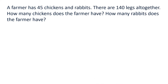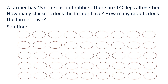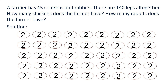Let us start solving the problem. A farmer has 45 chickens and rabbits. There are 140 legs altogether. How many chickens does the farmer have? How many rabbits does the farmer have? In the problem, we are given 140 legs and a total of 45 heads, meaning there are 45 chickens and rabbits in all. If we consider the legs, we know that chickens have only two legs while rabbits have four. So we first consider all 45 animals to be chickens, meaning all these animals have two legs.